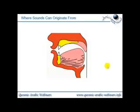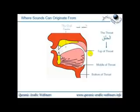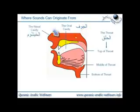So where can sounds originate from? The first place is the throat, your air passage, known as Al-Halq. We can divide this into the bottom, middle, and very top of the throat. The second place is the oral cavity — the space between the tongue and the roof of the mouth — known as Al-Jawf. We then have the nasal cavity, the air passage in your nose going towards the back of your throat, known as Al-Khayshoum.